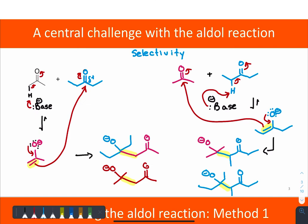What a challenge. Not only can we form two different enolates, but each of those enolates could react with either of the carbonyl electrophiles, so each one can form its own two different products. If we wanted one of these products to be the major one, at best we would get a 25% yield. So chemists have come up with two major approaches to make this reaction more selective.